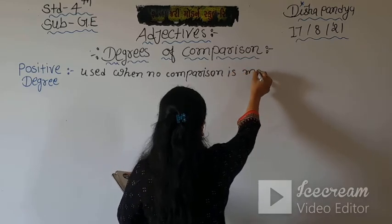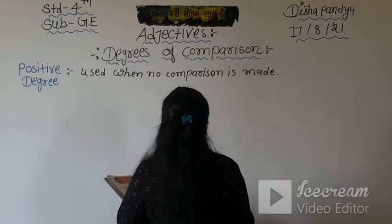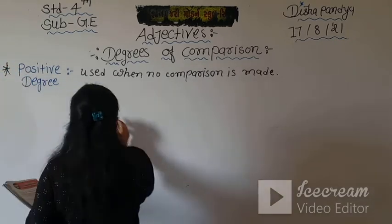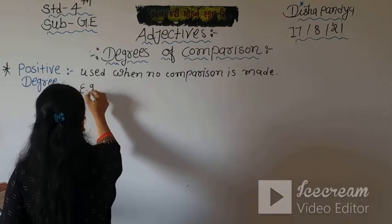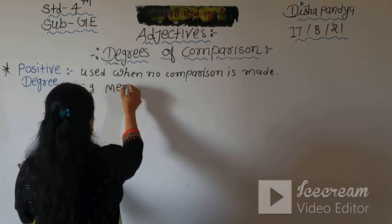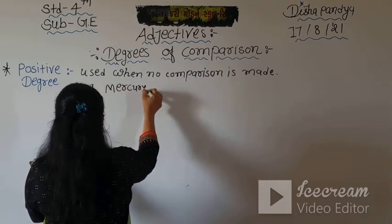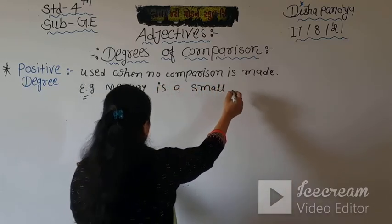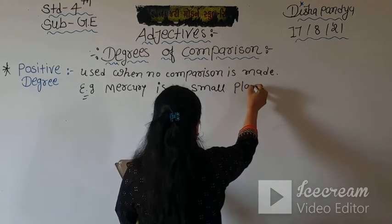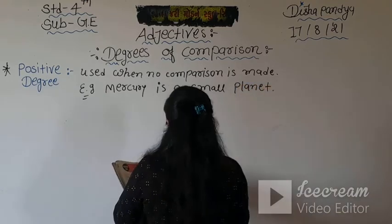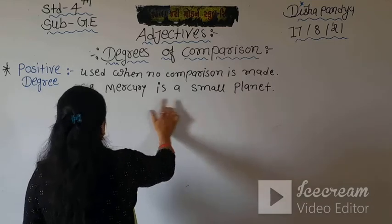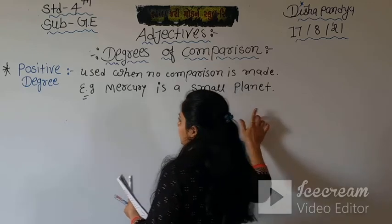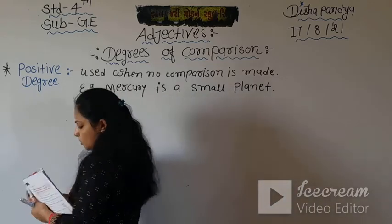Positive degree is used when no comparison is made. Example: Mercury is a small planet. Here, Mercury is shown as a small planet and no comparison is made with any other planet. When the sentence contains only a positive statement about a single object with no comparison at all, that is positive degree.